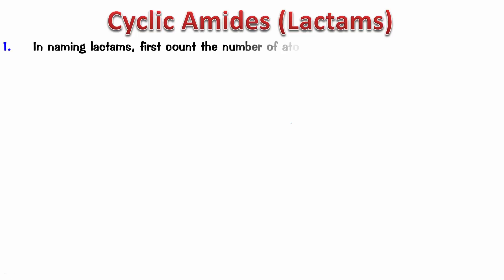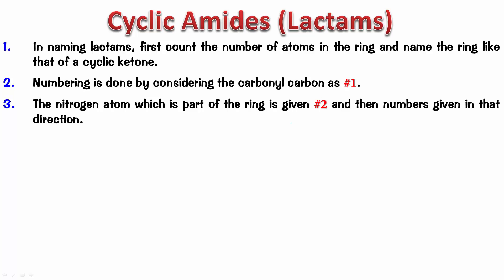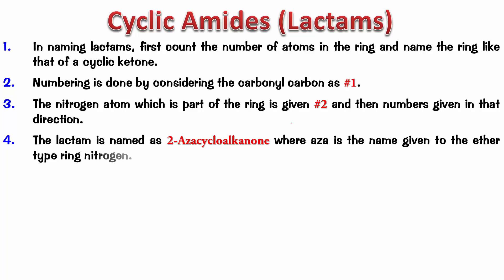In naming lactams, first count the number of atoms in the ring and name the ring like that of a cyclic ketone. The numbering is done by considering the carbonyl carbon as one. The nitrogen atom which is part of the ring is given number two, and then numbers are given in that particular direction. So what's the parent name?